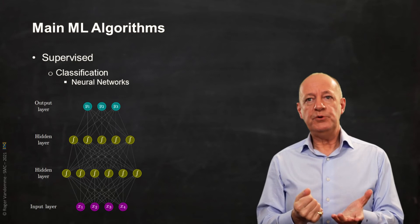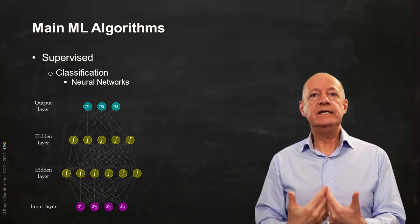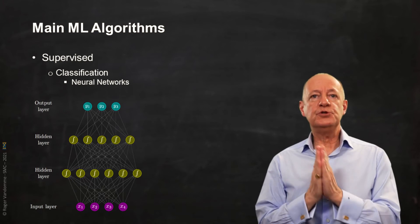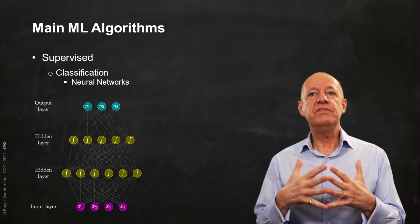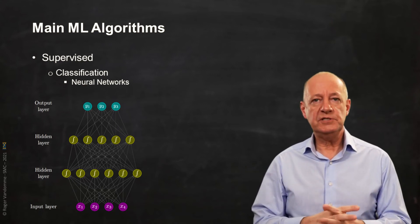Therefore, deep learning is a machine learning method that relies on the use of neural networks with more than five hidden layers, so more than seven layers in total.